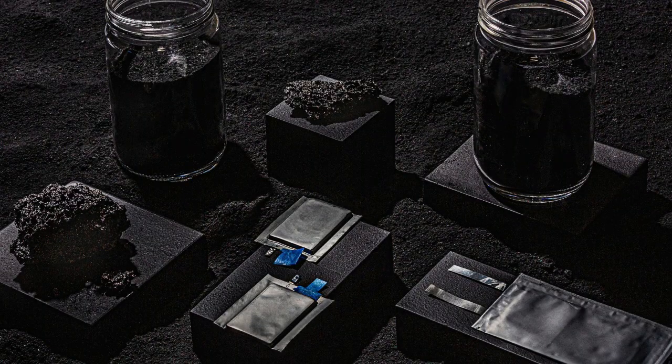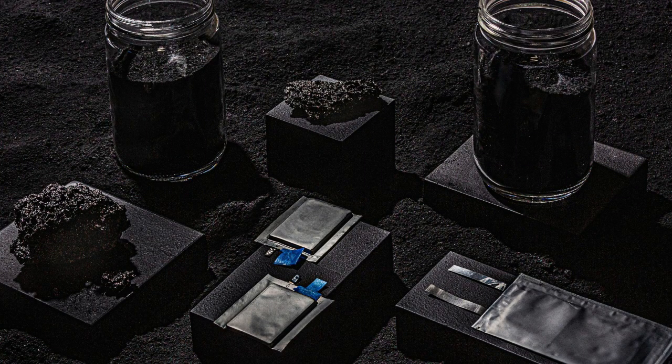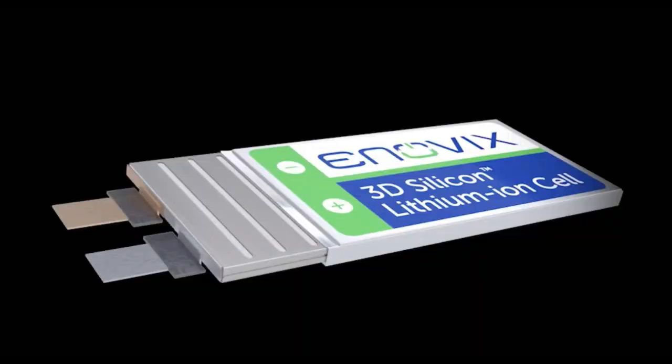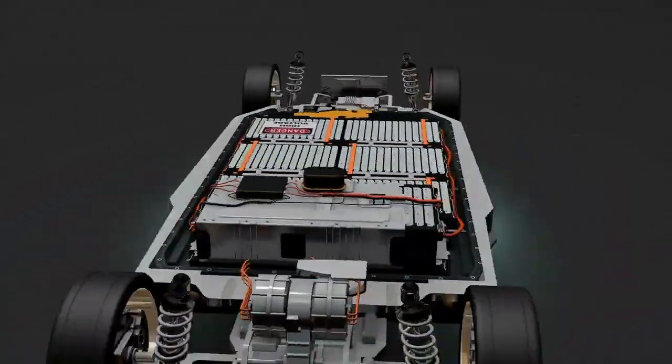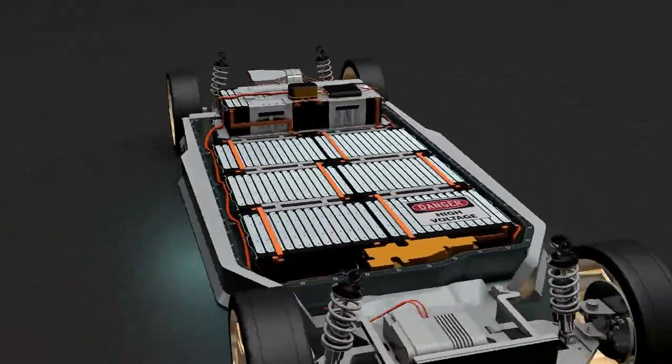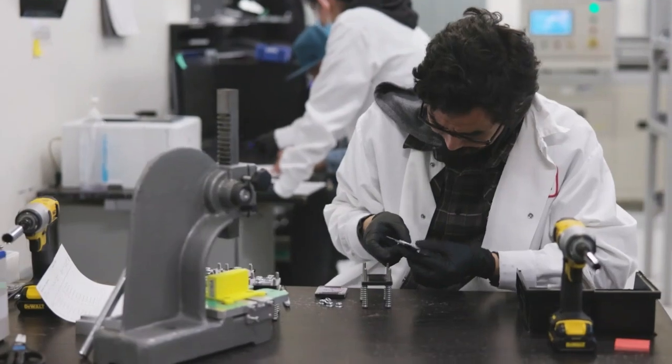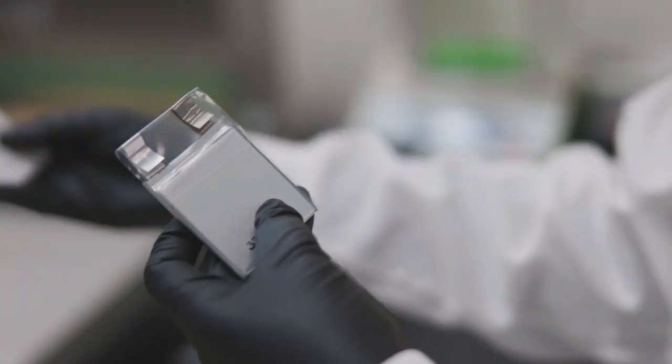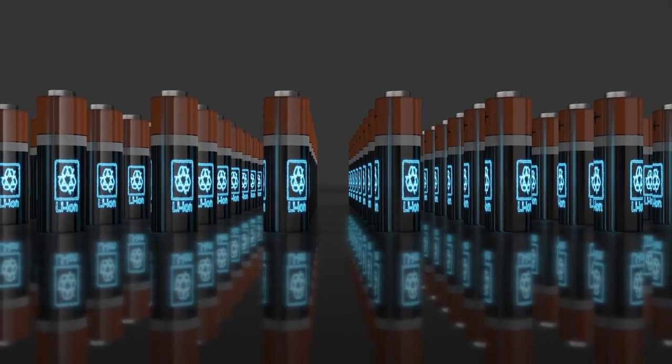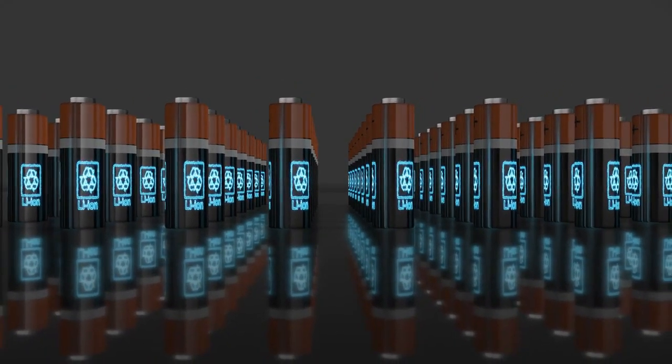When it comes to volumetric capacity, silicon-anode batteries outshine their lithium counterparts by a significant margin. With an impressive volumetric capacity of 9,786 mAh per cubic centimeter, silicon-anode batteries boast three times the capacity of lithium batteries, which stand at 3,271 mAh per cubic centimeter. This remarkable difference paves the way for enhanced performance and extended battery life.